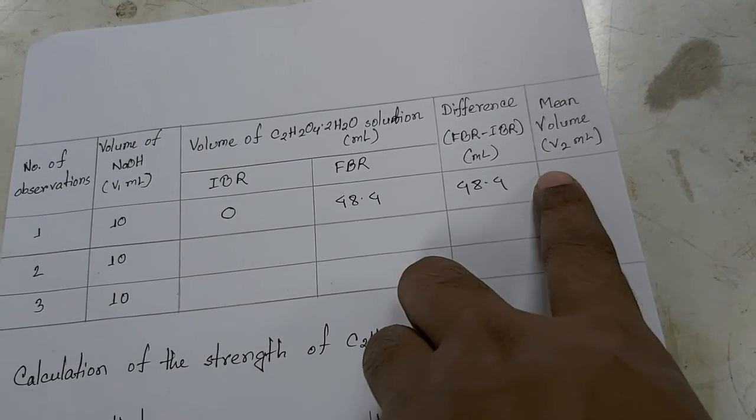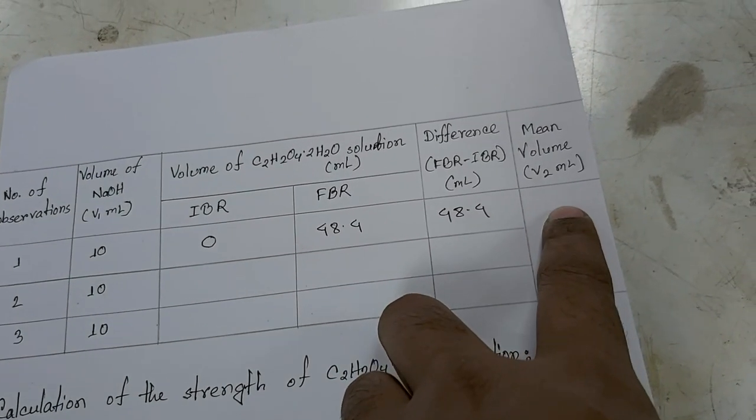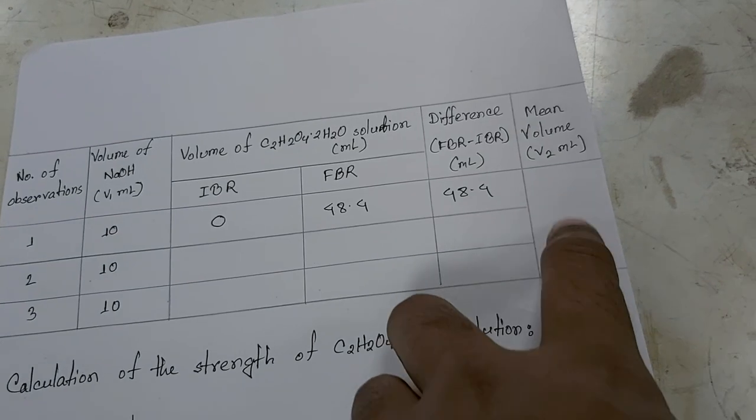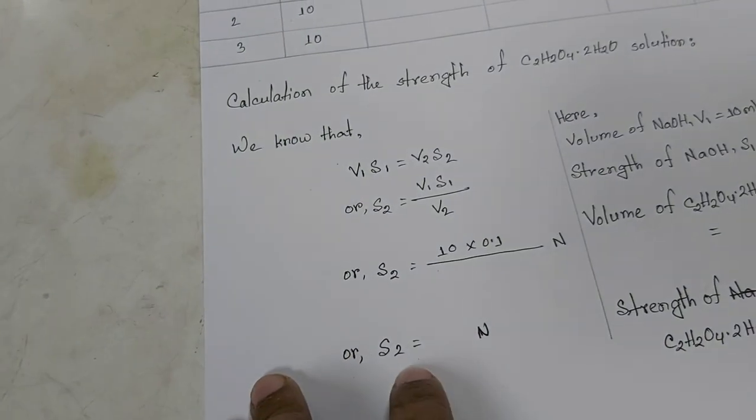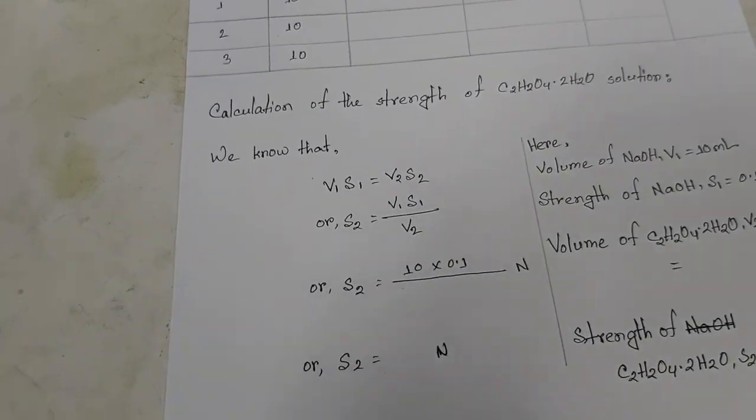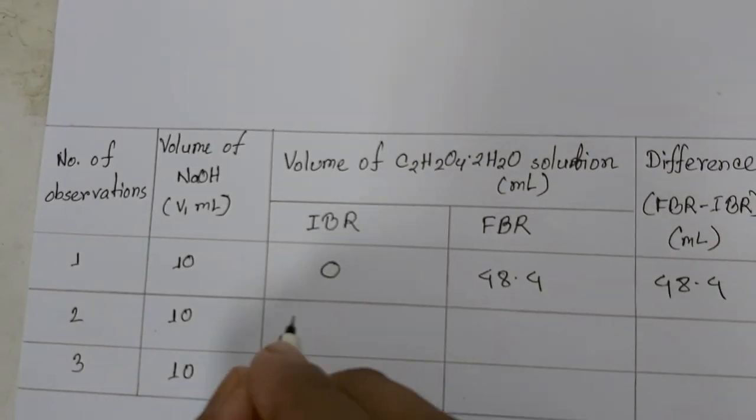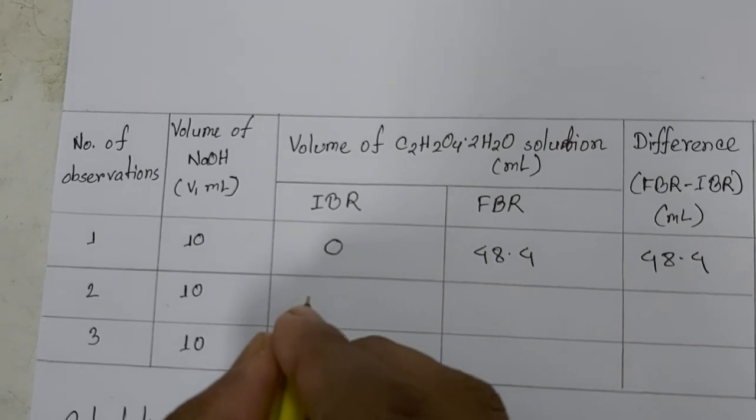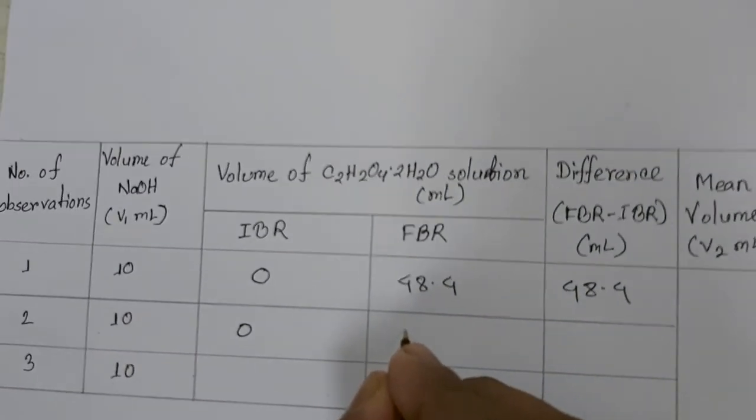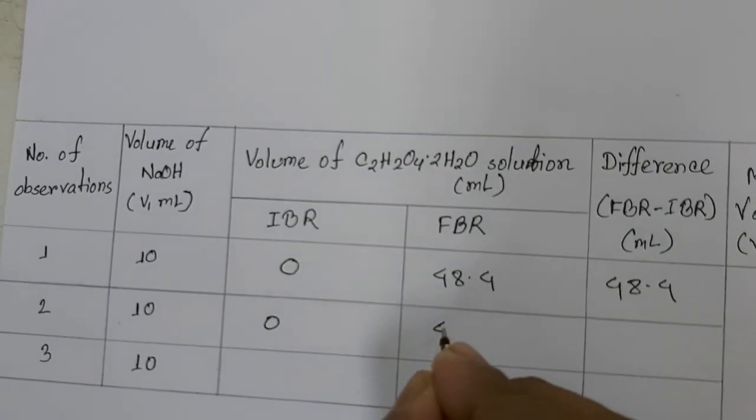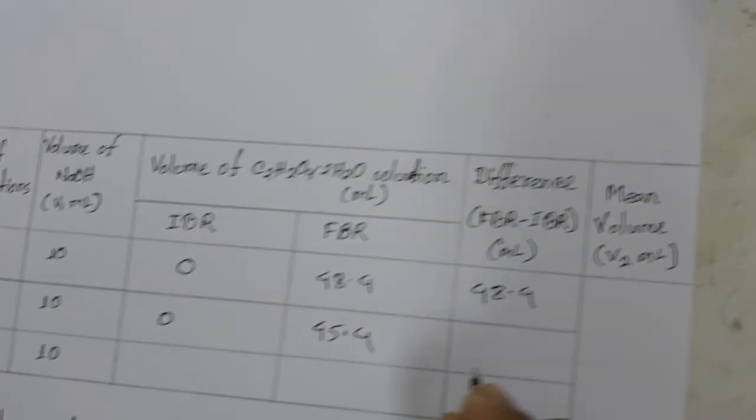V2 is the mean of three titration volumes. This V2 will be written here, and finally we will get S2. For the second titration, it started with 0 and ended at 45.4, so the difference is 45.4.